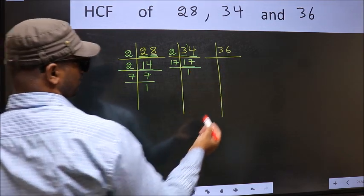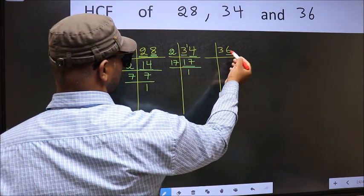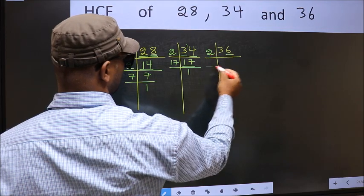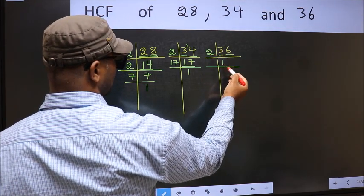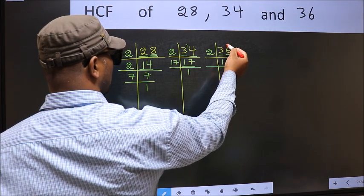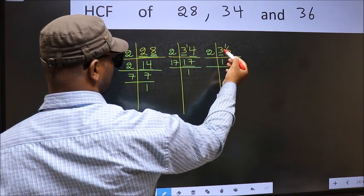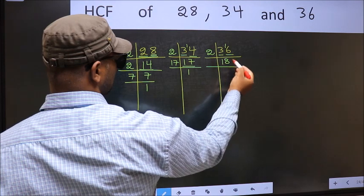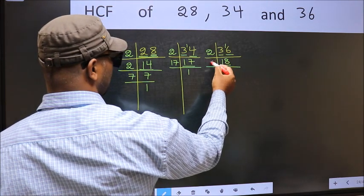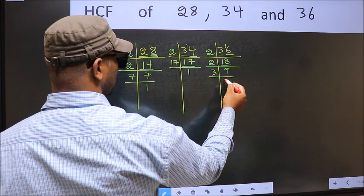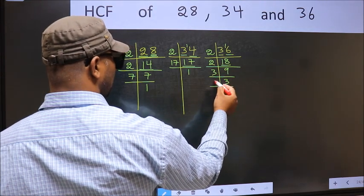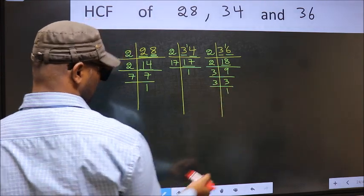The other number, last digit 6 is even, so take 2. First number 3, a number close to 3 in 2 table is 2, 1, 2. 3 minus 2 is 1, carried forward 16. When do we get 16 in 2 table? 2, 8, 16. Now 18 is 2, 9 is 18. 9 is 3, 3 is 9. 3 is a prime number, so 3, 1 is 3.